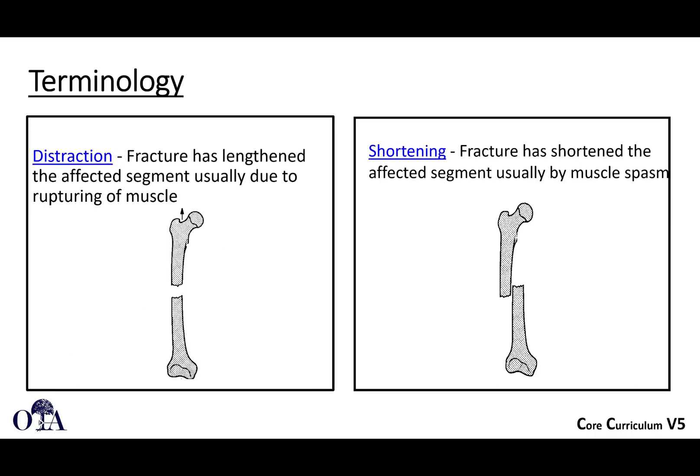Distraction is a type of displacement that occurs when there's lengthening. We will sometimes do this on a fracture table or traction table, or when applying skeletal traction or a large distractor — ways we intentionally get a fracture back out to length. If a fracture is excessively lengthened, we say it's distracted. The opposite would be shortening, which can happen due to muscle spasm if the patient isn't fully relaxed from anesthesia and paralysis.